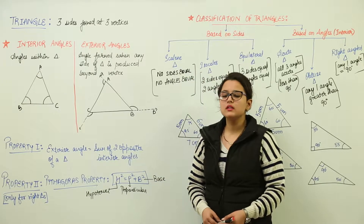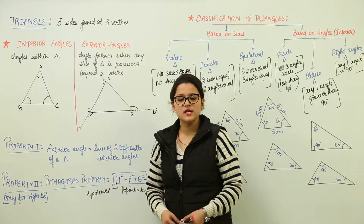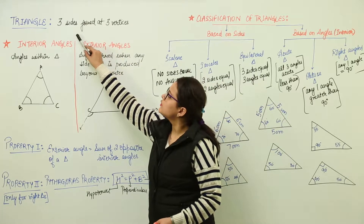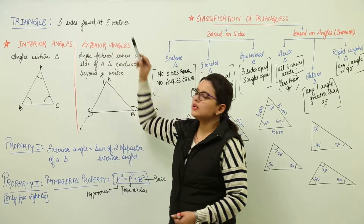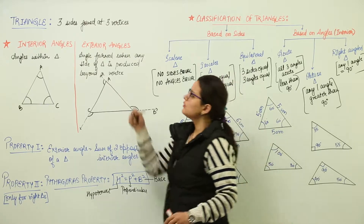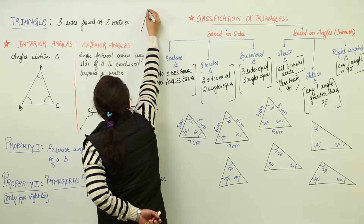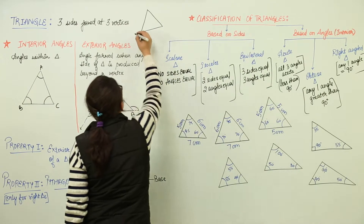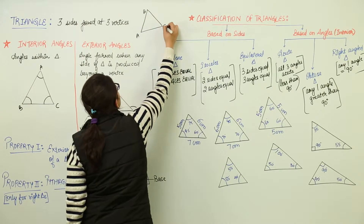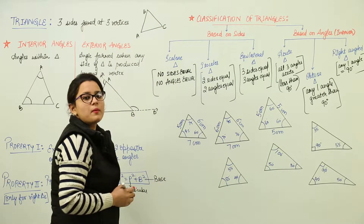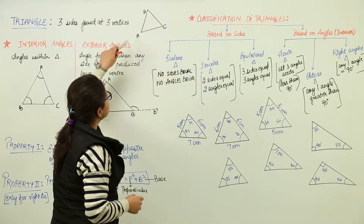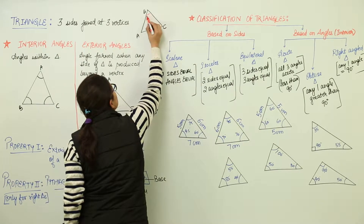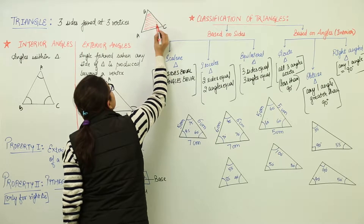What is a triangle? A triangle has three sides and those three sides are joined at three vertices. So we can define a triangle as three sides joined at three vertices. This triangle has three sides meeting at three vertices. If I want to name it, I can name it as ABC or ECD or whatever we want. Being made like this, it has divided the total area into two parts.